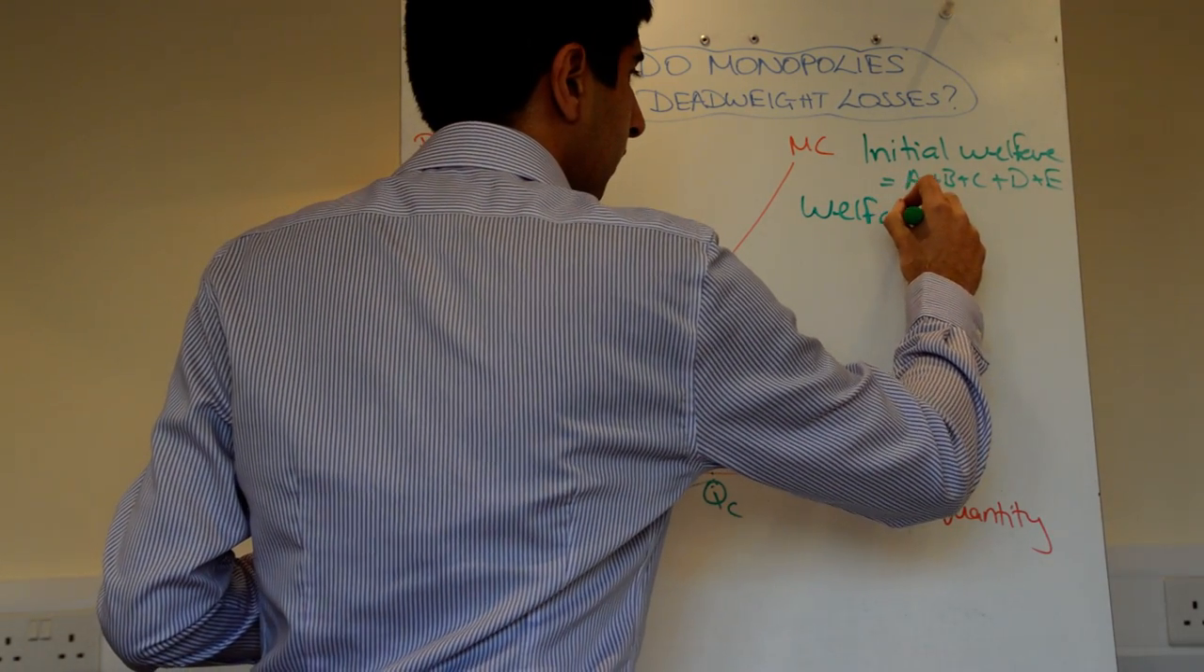So if we now look at welfare after monopoly, it's now just A plus B plus C. So we've lost D and E, and that is the deadweight loss. The actual definition of deadweight loss is the loss of efficiency, or a reduction in net efficiency from trades that are not made.